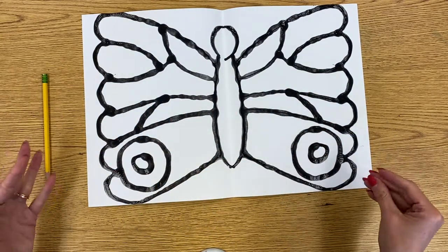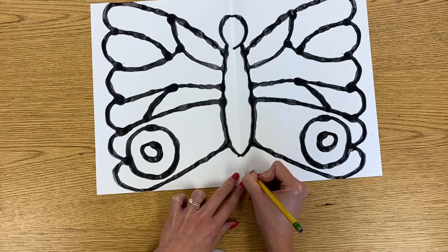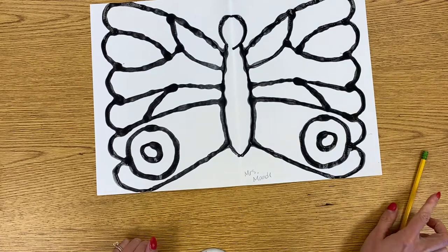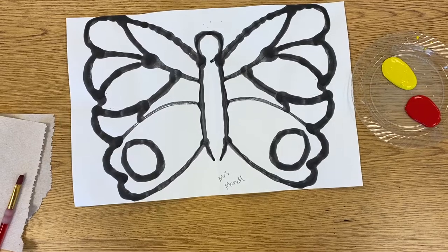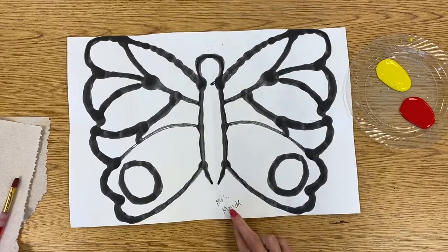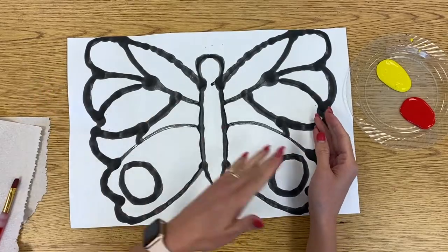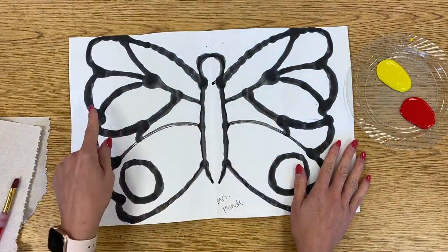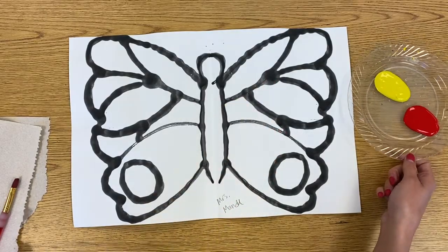So our Senorita Mariposas are all finished for today. You can write your name on your paper and put it on the drying rack. And then next week when you come to art, we will paint our butterflies. All right, everybody. So we made our beautiful symmetrical butterflies or mariposas last time in art. We used our black glue and then we folded our paper to create the same design on both sides. So now we are going to paint in our monarch butterflies.